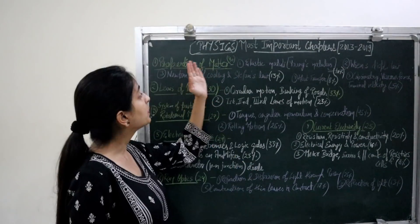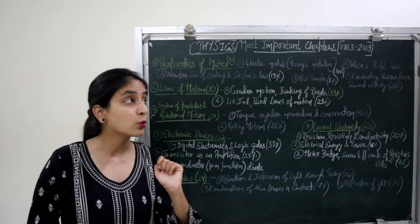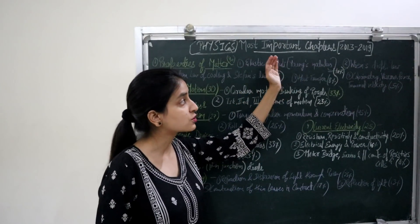The first most important chapter is properties of matter. In the past 7 years, there are total 40 questions. The most important topics are elastic moduli, Young's modulus topic.